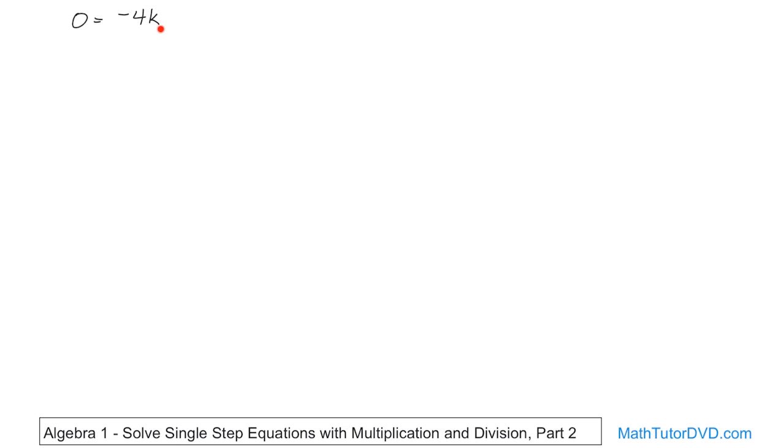Well, we have k over here. We want to get it by itself. We're multiplying him by negative 4. So in order to get him by himself, let's rewrite the equation first.